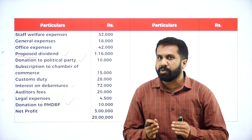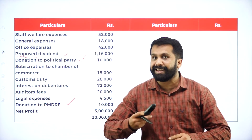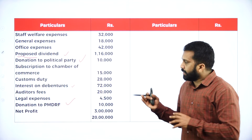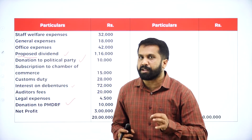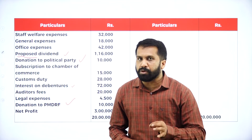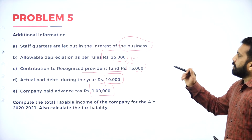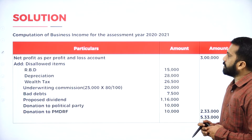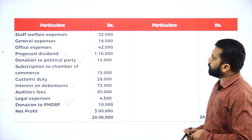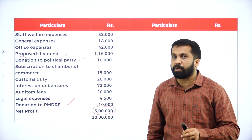Under assessment of company, the only things you are supposed to remember are: what are disallowed items and what are other-head income. Whatever problem we are discussing today, you can keep it as a base — because 90% of the concept of assessment of company is included in this problem. For your examination, if you want to do revision, please work out this problem as your revision. Now, everything is done. I will go to your answer.